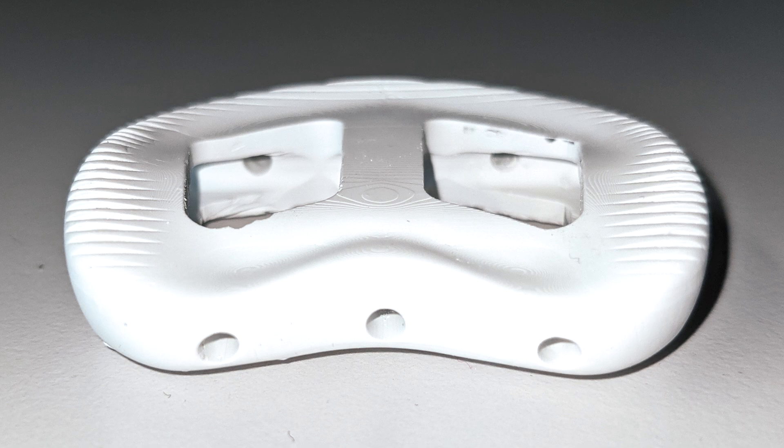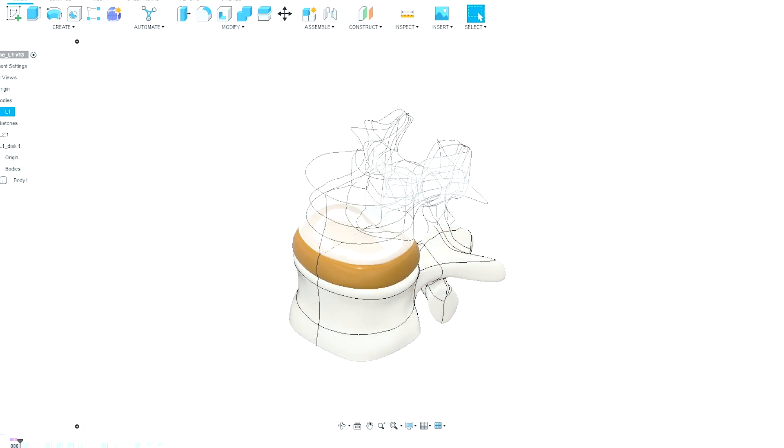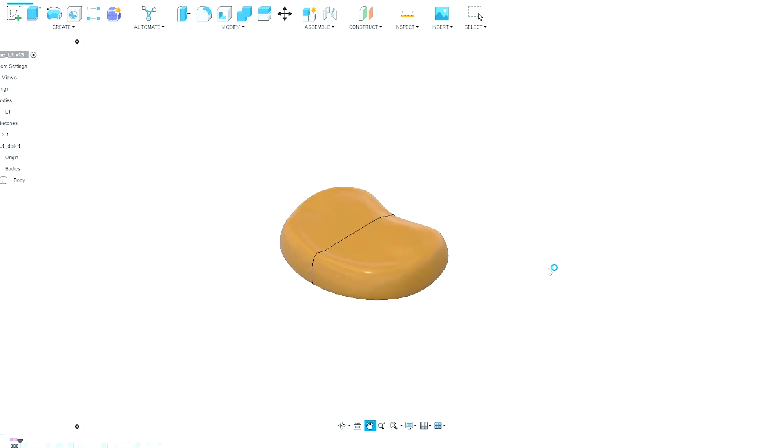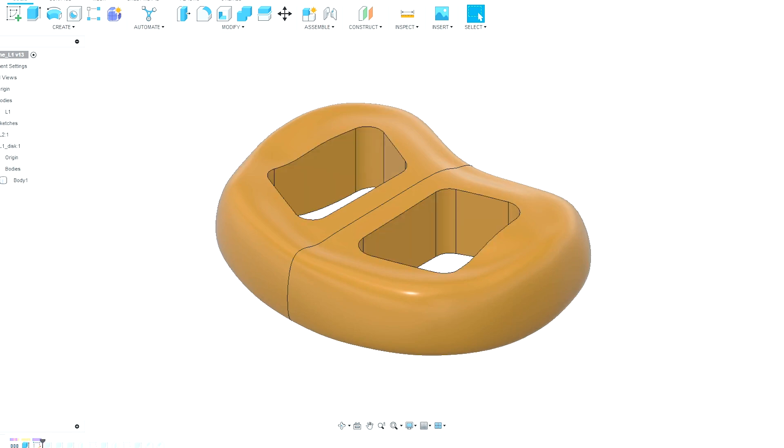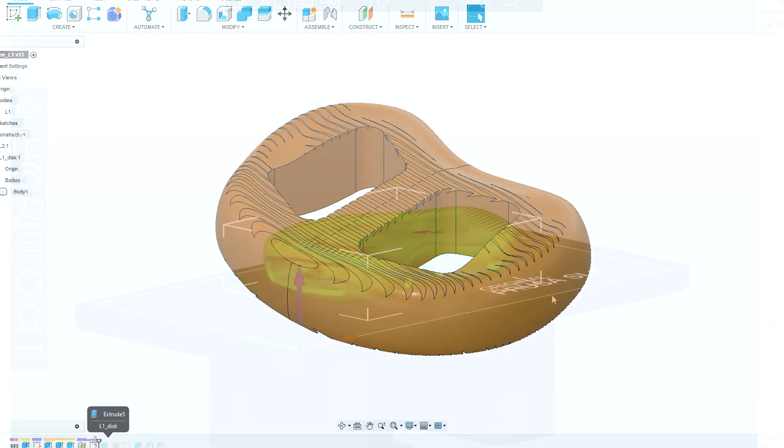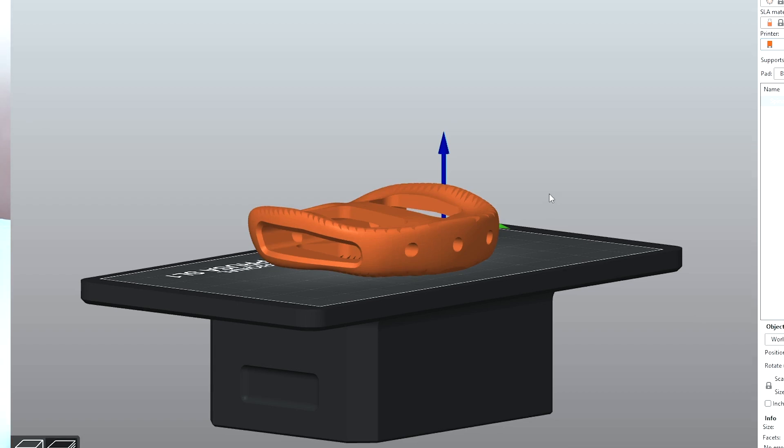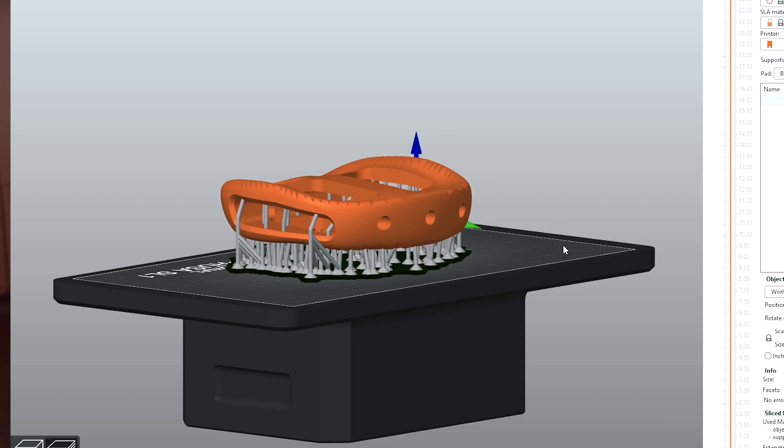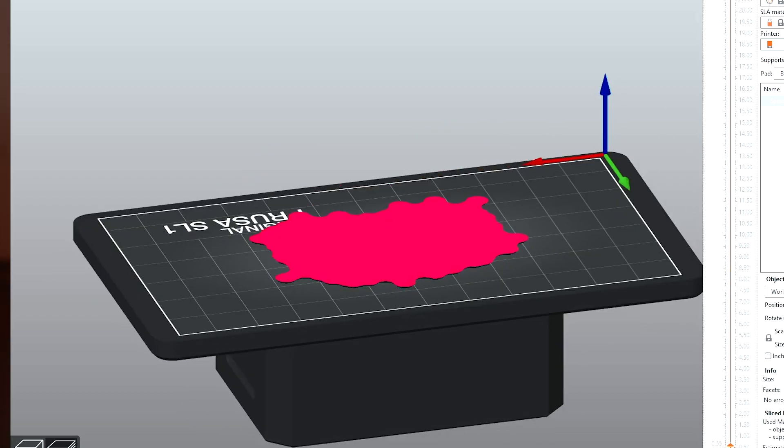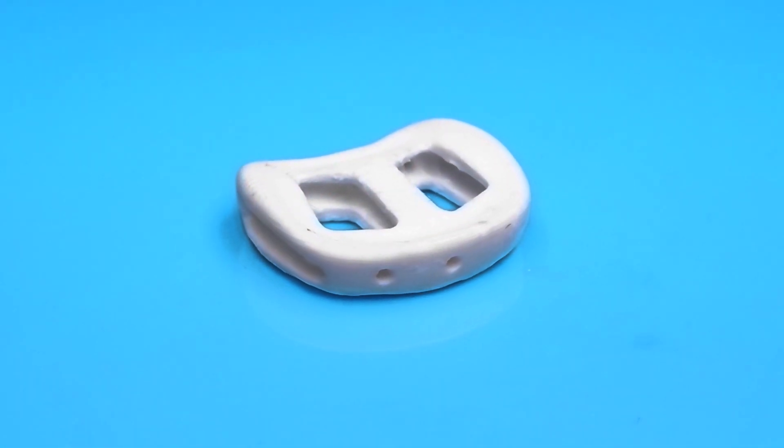Here's how the stereolithography process works. First, we prepare a 3D digital model of the desired object using computer-aided design software, or CAD for short. Then, the digital model is sliced into thin, horizontal layers using slicing software, like this one you see me using here. Each layer, by the way, is a 2D cross-section of the final object we want to create.